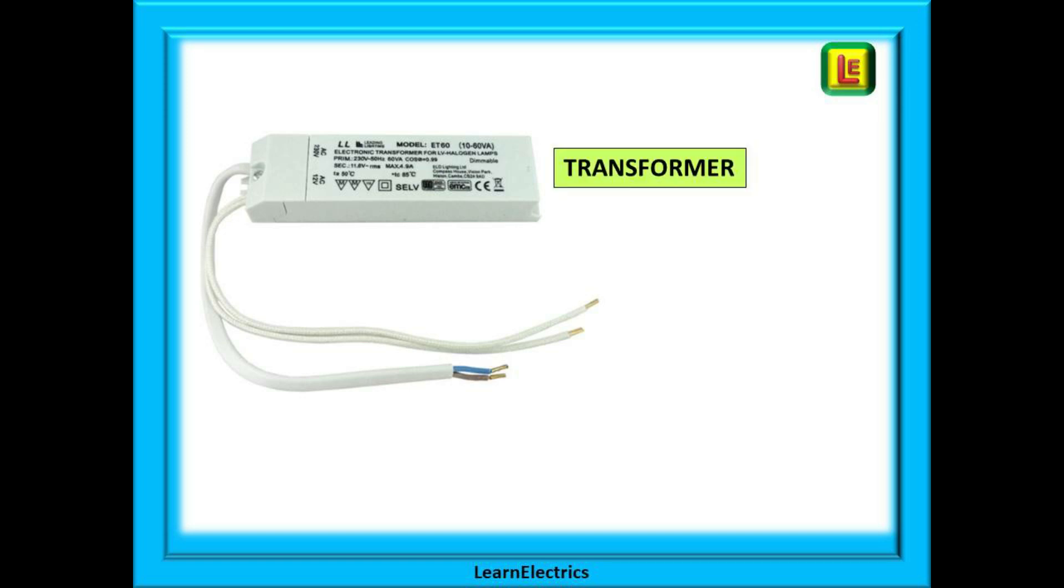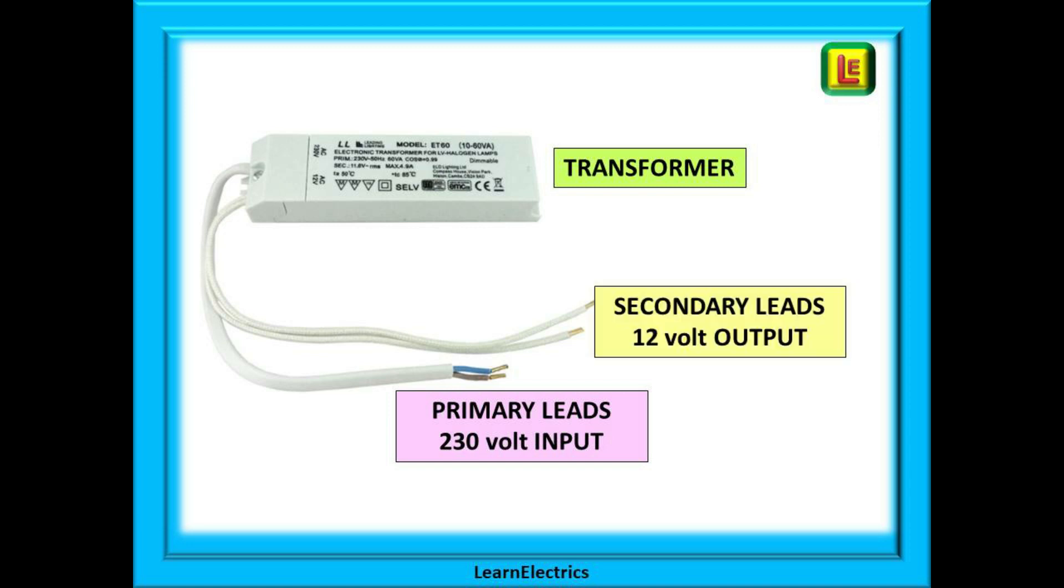We will start simple to begin with. We have the plastic case which houses the transformer. One cable contains the primary leads or conductors. Primary is what we call the input or 230 volt side, and another pair of conductors that make up the secondary or output side which is 12 volts in this case. Sometimes there will be no leads provided, just empty terminal blocks. Make sure that you know and recognize the difference between primary and secondary before making connections.